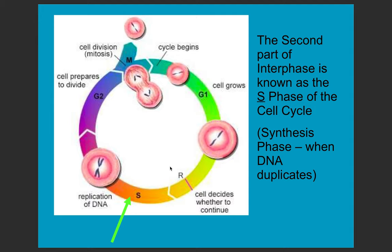Then we move into S phase, or synthesis phase. This is where the DNA — the chromosomes — are copied and duplicated. We now have two sets of chromosomes in order for the cell to make two new cells that are exactly the same as the original. In G1 we only have one chromosome, and here in S phase we have two.